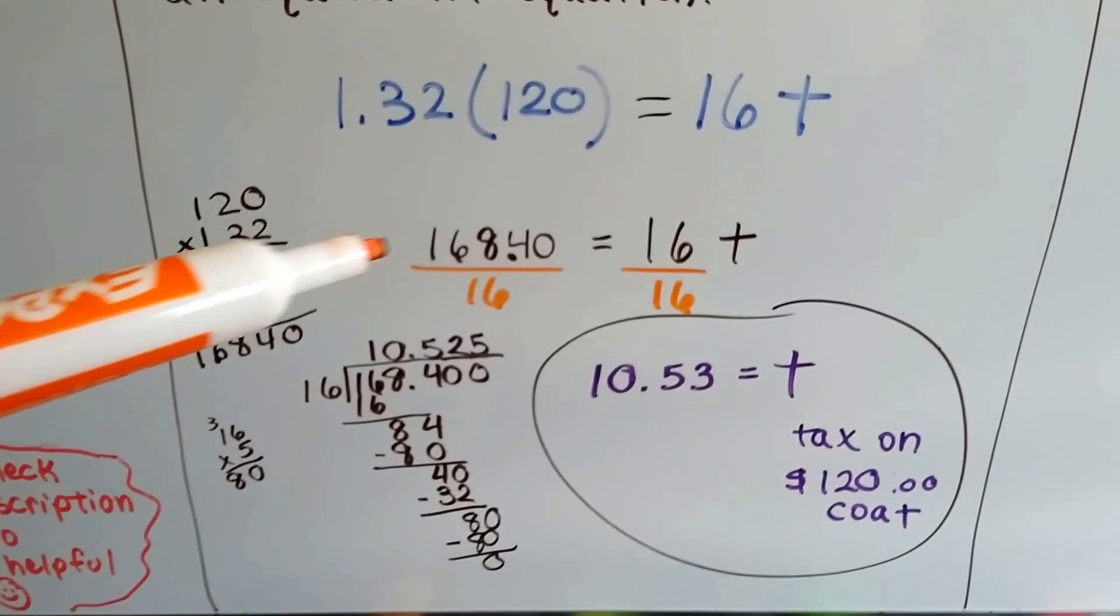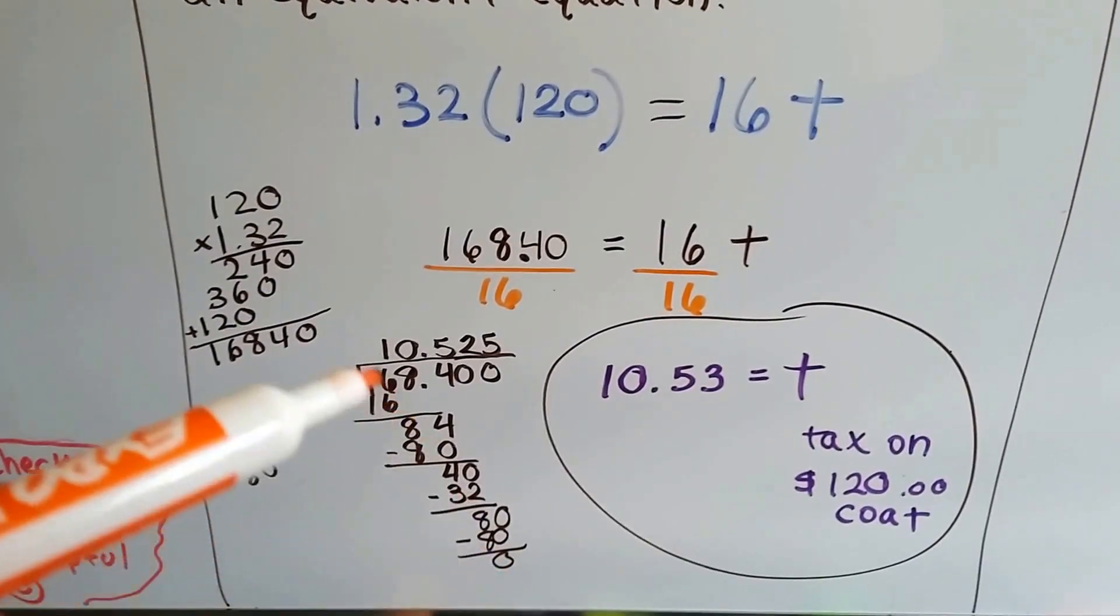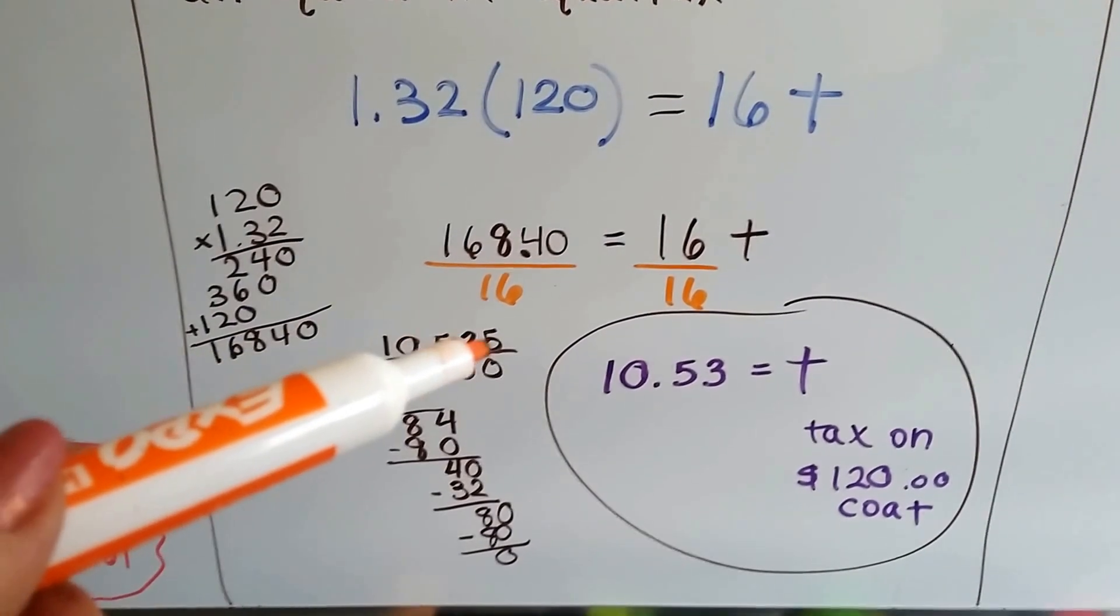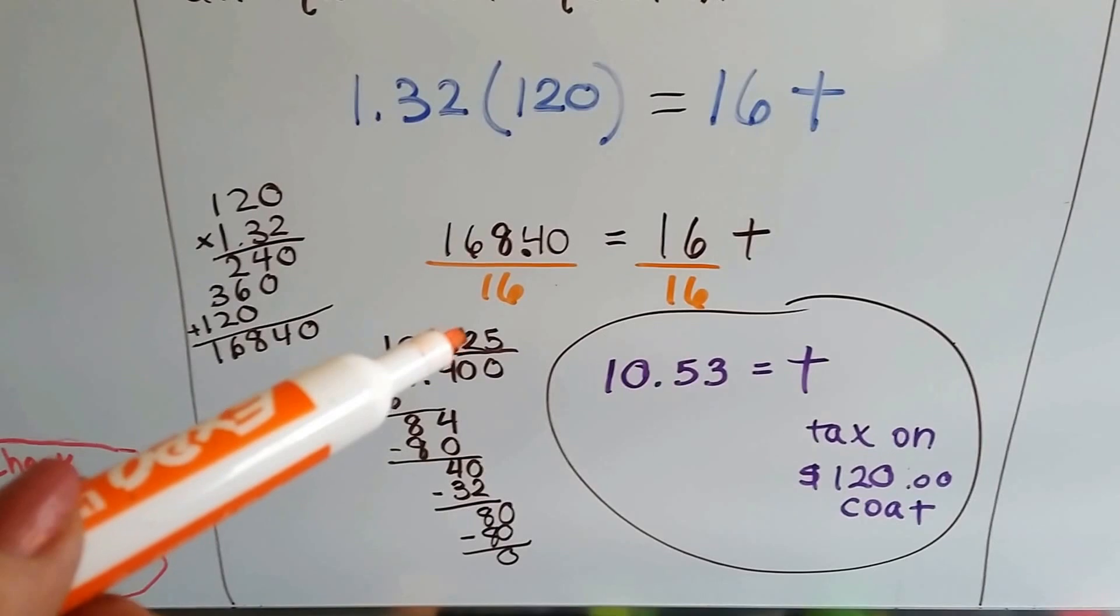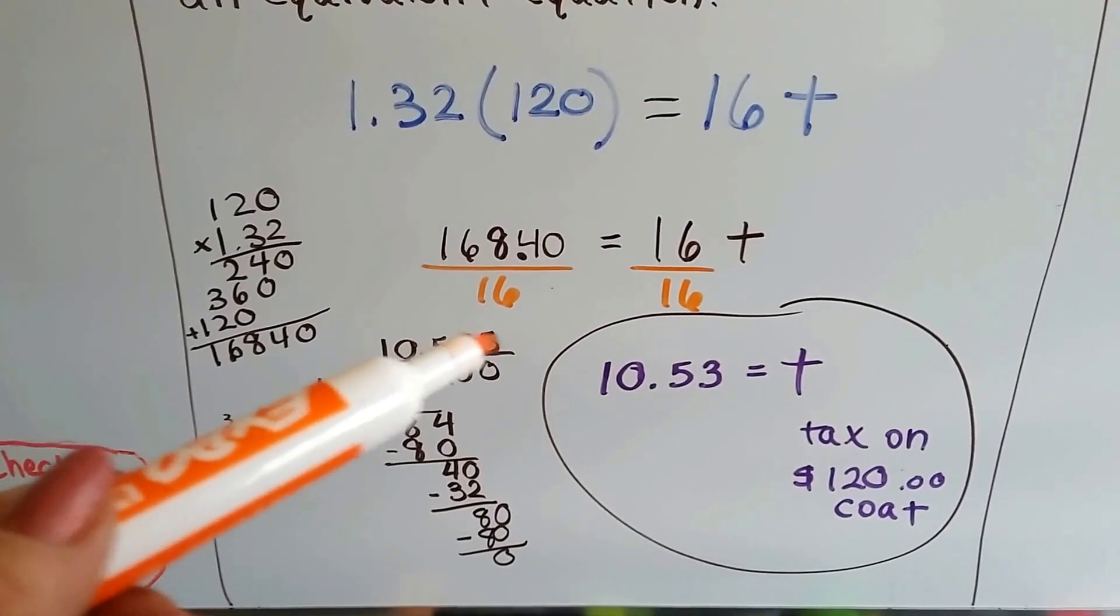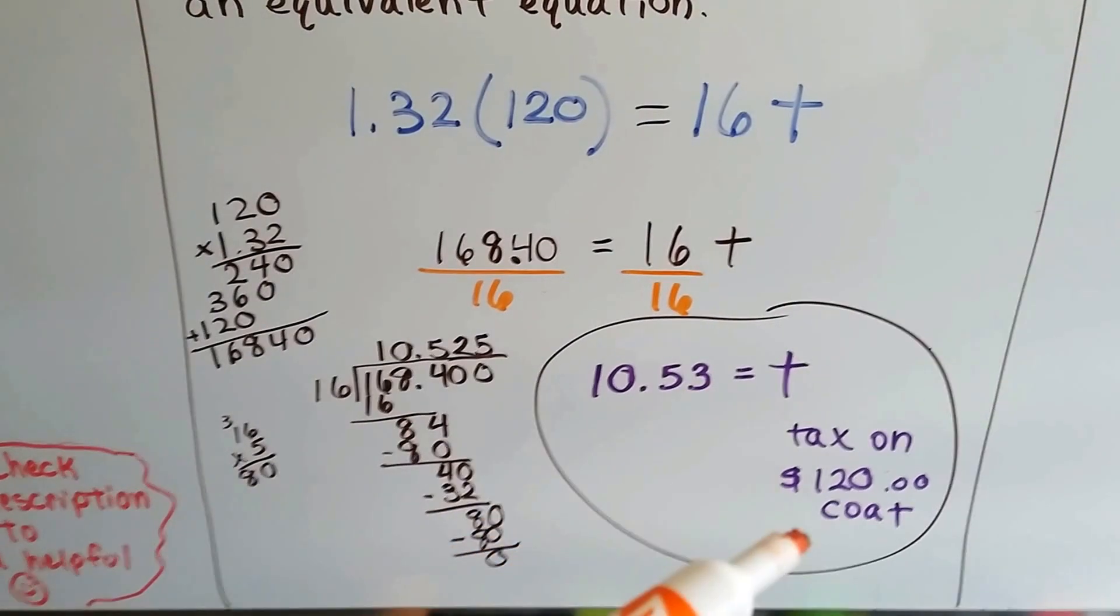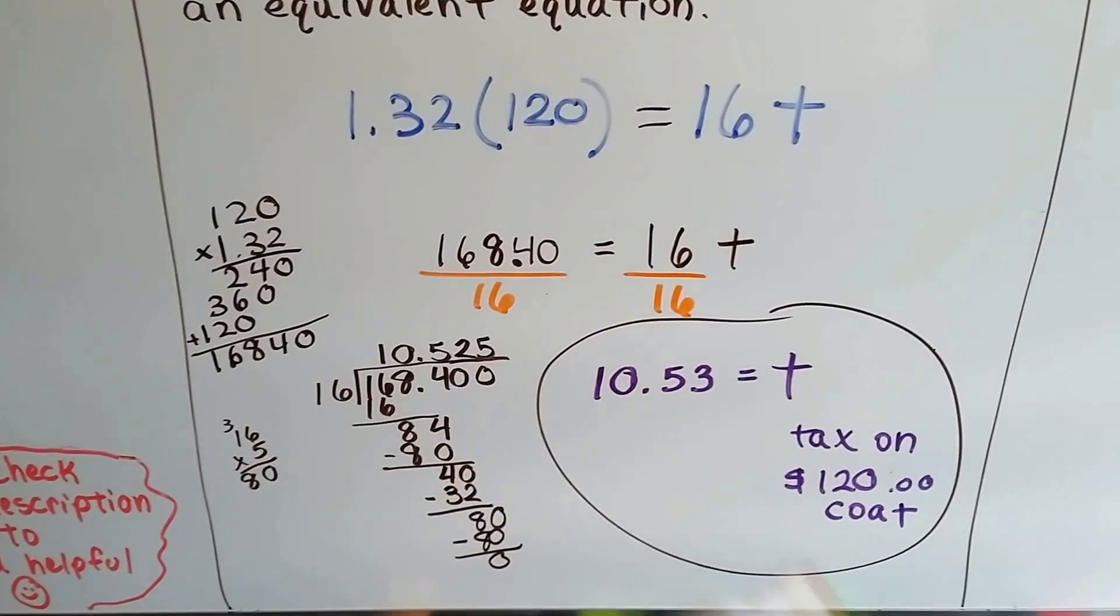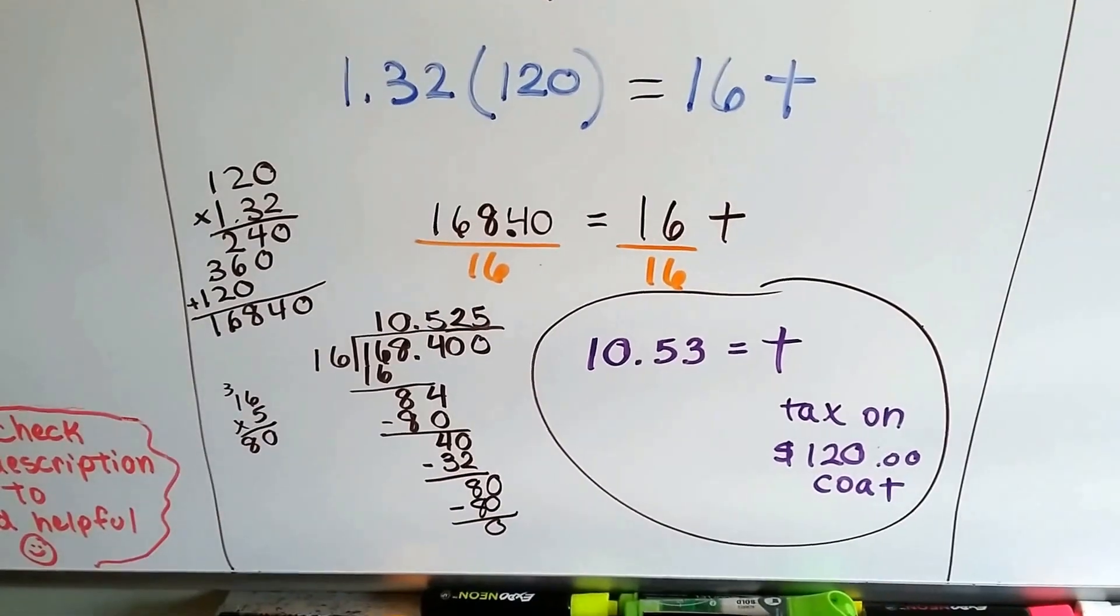$168.40 divided by 16 came out to 10.525. And because we're talking money and there is no .525, there's no 52.5 cents, I rounded it up to 53 cents. So the tax on the coat would be $10.53. See? You have to pay an extra half-penny, wouldn't you?